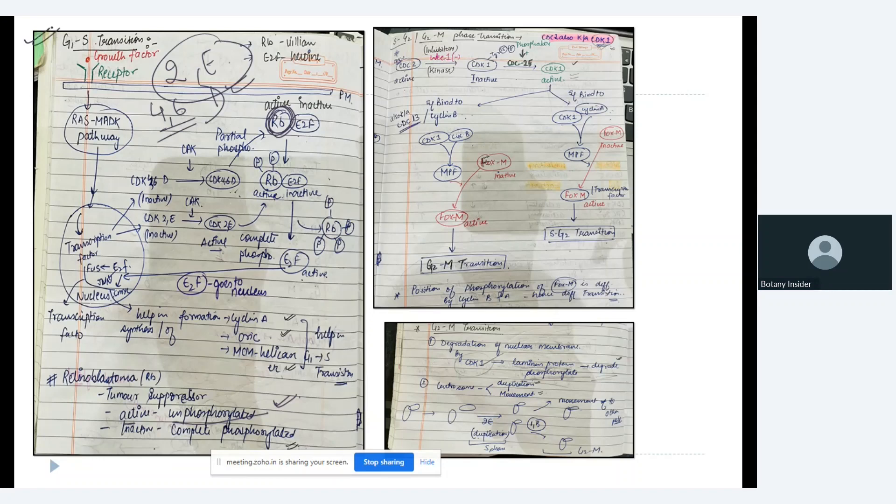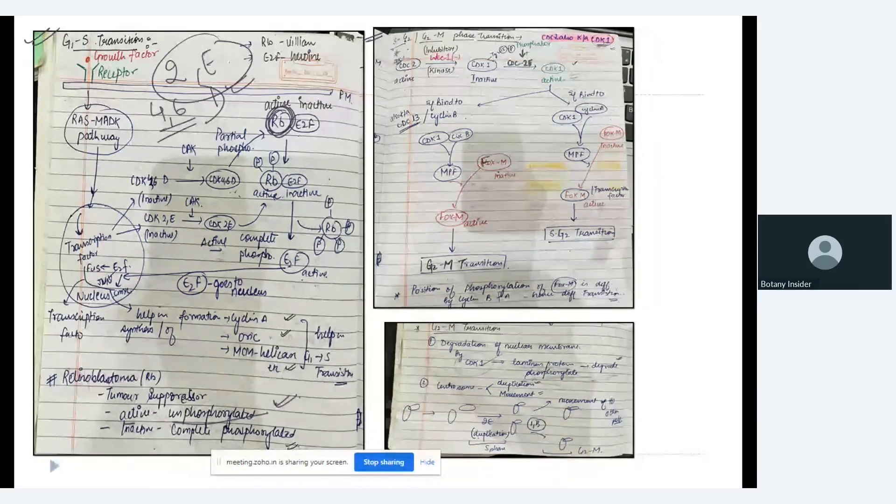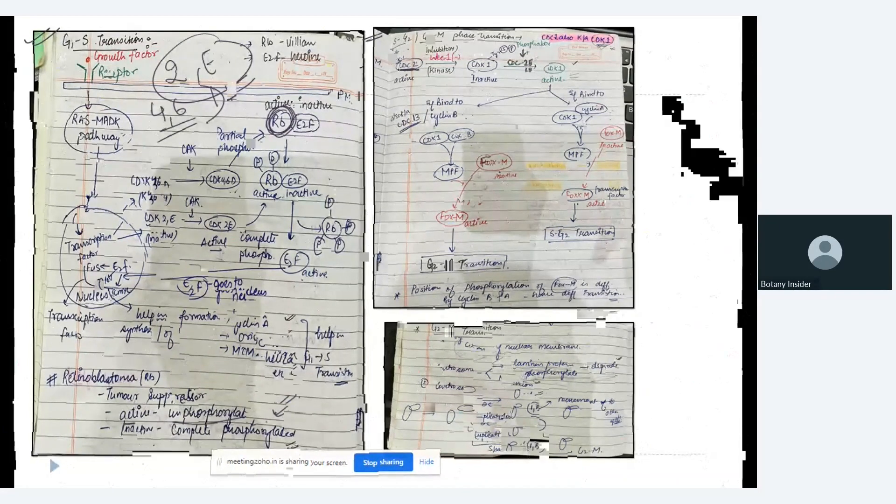So this was about the G1 to S transition. Second, we have S to G2 transition. In S to G2 transition or the G2 to M transition, what happens? Remember it this way. So now in every step, we require different components or different variables are required. In case of S to G2 and G2 to M phase transition, we require CDC2. And CDC2 is also given the name of CDK1. You have to remember the alternate names as well.